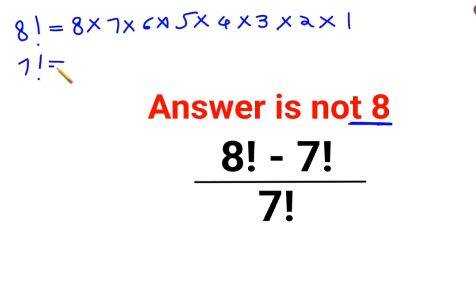Similarly, for 7 factorial, I can write this as 7 multiplied by 6, multiplied by 5, multiplied by 4, multiplied by 3, multiplied by 2, multiplied by 1.